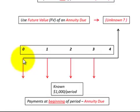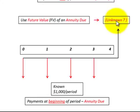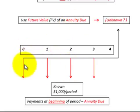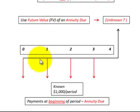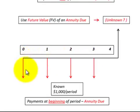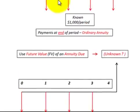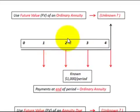Now we have four equal payments again, but they're at the beginning of each period, and we want to determine their future value — the unknown amount. In this case, we'd use the future value of an annuity due. Annuity due means payments are at the beginning of the period. When given a problem with equal payments over a period, you must determine whether they're at the beginning — annuity due — or at the end — ordinary annuity.